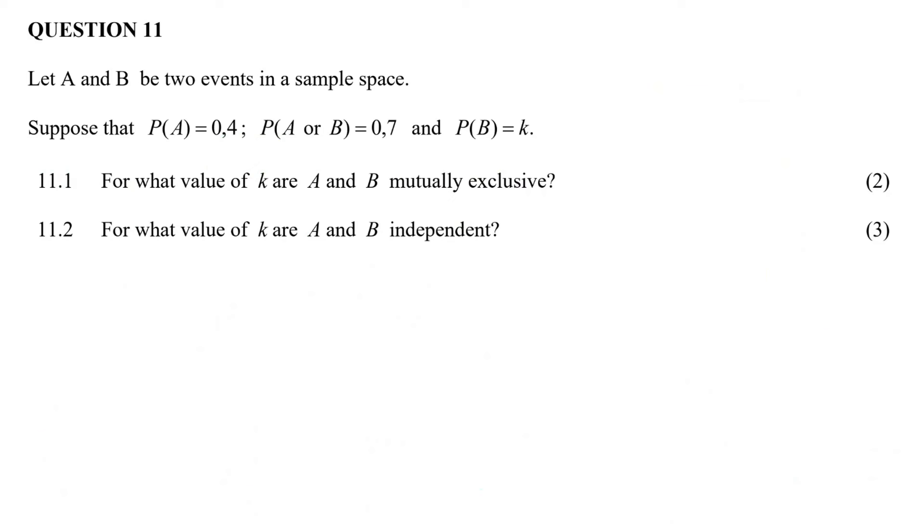Let A and B be two events in a sample space. Suppose that the probability of A is 0.4, A or B is 0.7, and B, the probability of B is K. For what value of K are the events A and B mutually exclusive?